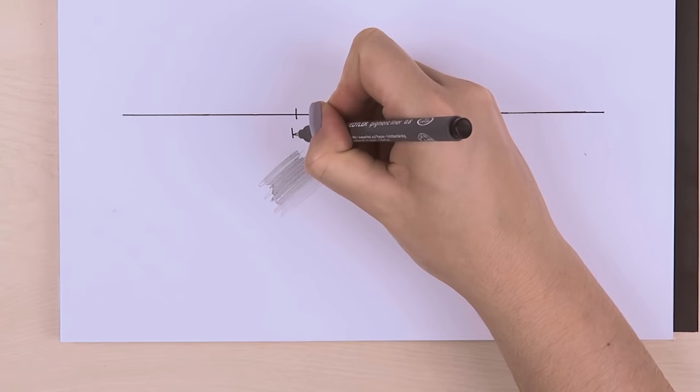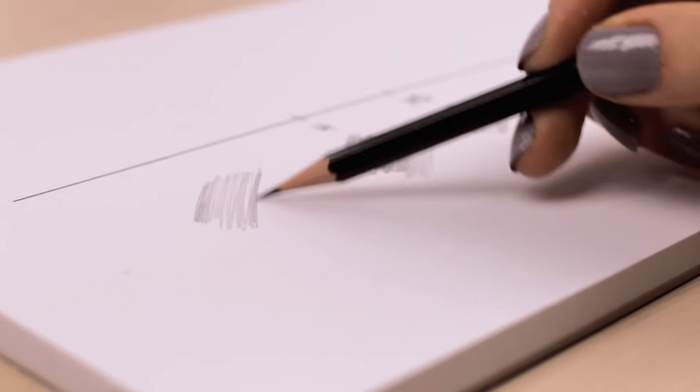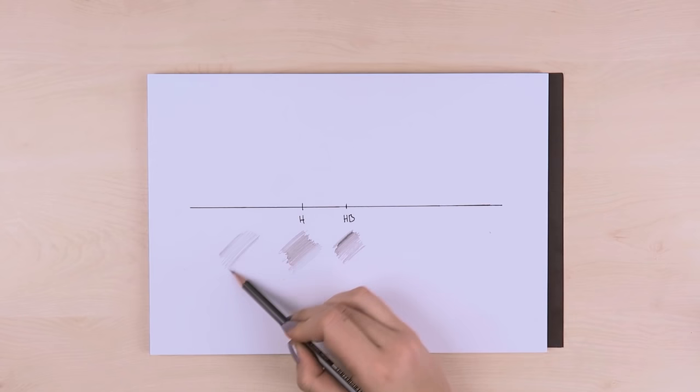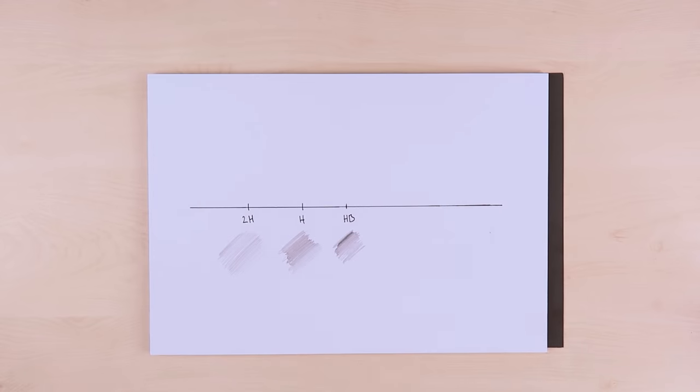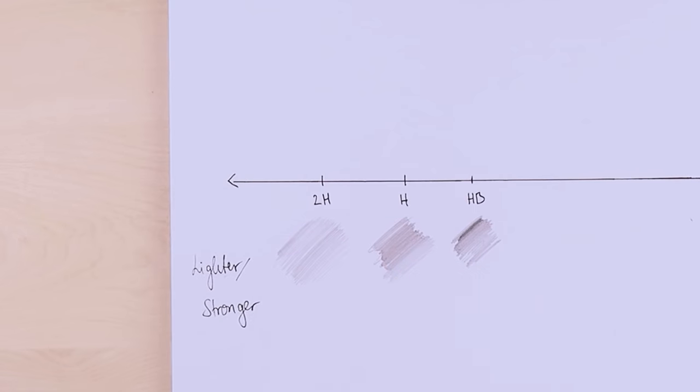H pencils are great for sketching thin and non-blendable lines. As you can see, the lighter the number of my H pencil is, the lighter the shading becomes. So with these pencils, you can basically only get lighter and lighter.